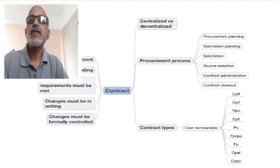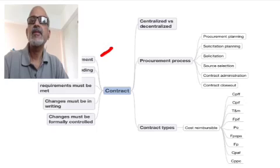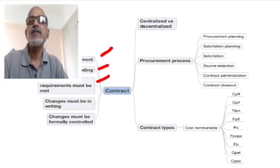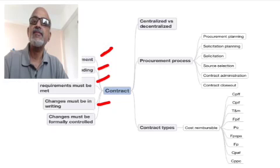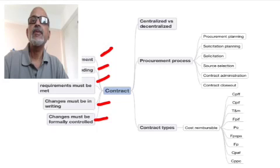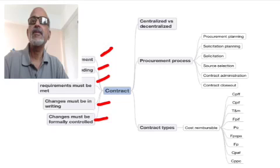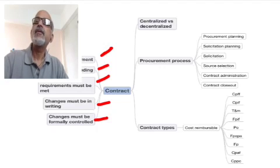All contracts are a formal agreement between the customer and the supplier. They are legally binding, and all contract requirements must be met — otherwise the other party can sue you. Changes must be in writing and formally controlled. You cannot have amendments to the contract by way of emails. Once the contract is signed, it should fall under a change management procedure, so it cannot be very ad hoc.